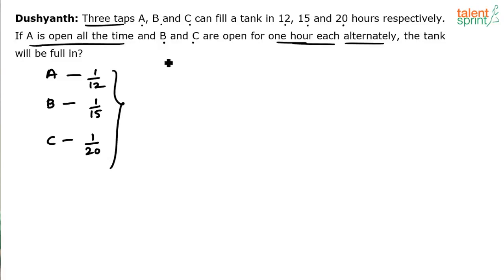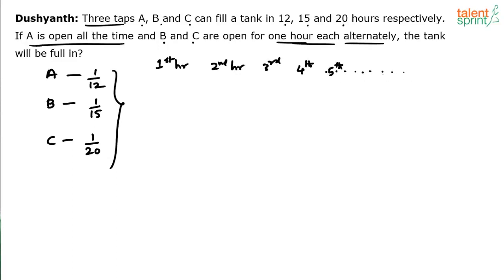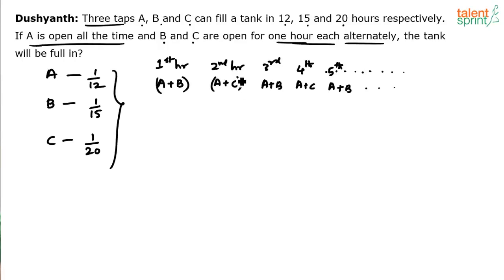For the sake of clear explanation, let me put up a table. In the first hour, A and B work together. In the second hour, A and C work. Third hour: A and B again. Fourth hour: A and C. Fifth hour: A and B, and so on. Each hour two persons are working — A always, and then alternately B or C.